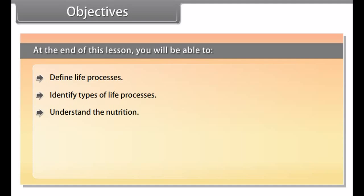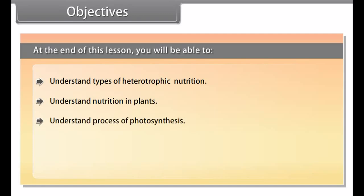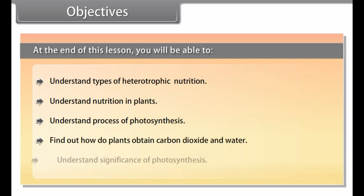Objectives. At the end of this lesson you will be able to define life processes, identify types of life processes, understand nutrition, autotrophic nutrition, heterotrophic nutrition, find the types of heterotrophic nutrition, understand nutrition in plants, understand the process of photosynthesis, find out how plants obtain carbon dioxide and water, and understand the significance of photosynthesis.